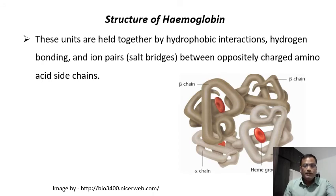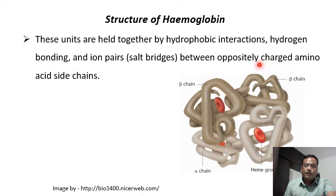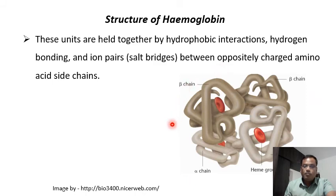In the case of hemoglobin, the beta chain — even though it is 146 amino acids long — has no function on its own, and neither does the alpha chain alone. Only when they combine to form the hemoglobin molecule do they become functional as a pigment molecule.